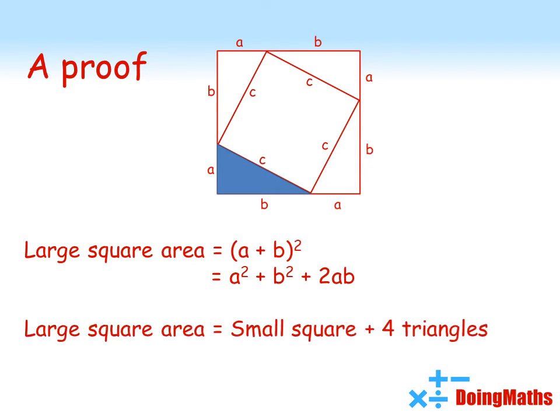So putting this all together, we get c squared plus four lots of half ab, which equals c squared plus 2ab.